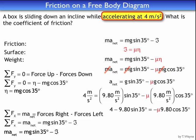Suppressing units to simplify: 4 minus 9.8 sine 35 equals negative mu times 9.8 cosine 35. Rearranging to isolate mu gives mu equals 0.135. This is a lower coefficient than the last problem because the box is accelerating while sliding down the incline.